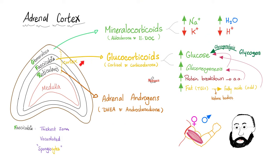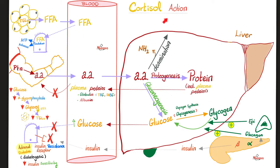Cortisol comes from the zona fasciculata. Cortisol is a glucocorticoid. Why gluco? Because it raises your blood glucose — by breaking down glycogen into glucose, or by making glucose from new non-carbohydrate sources like some amino acids and fatty acids. What do you call making glucose from new sources? Gluconeogenesis. Cortisol's action is complicated and is discussed in detail in the physiology playlist.